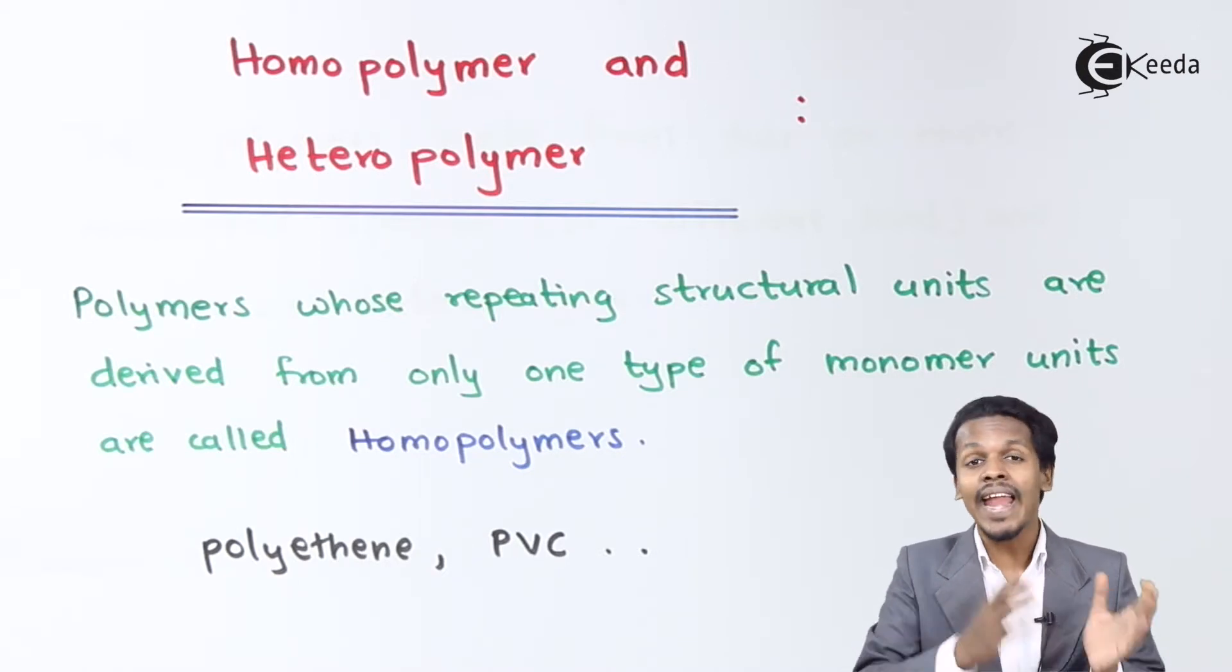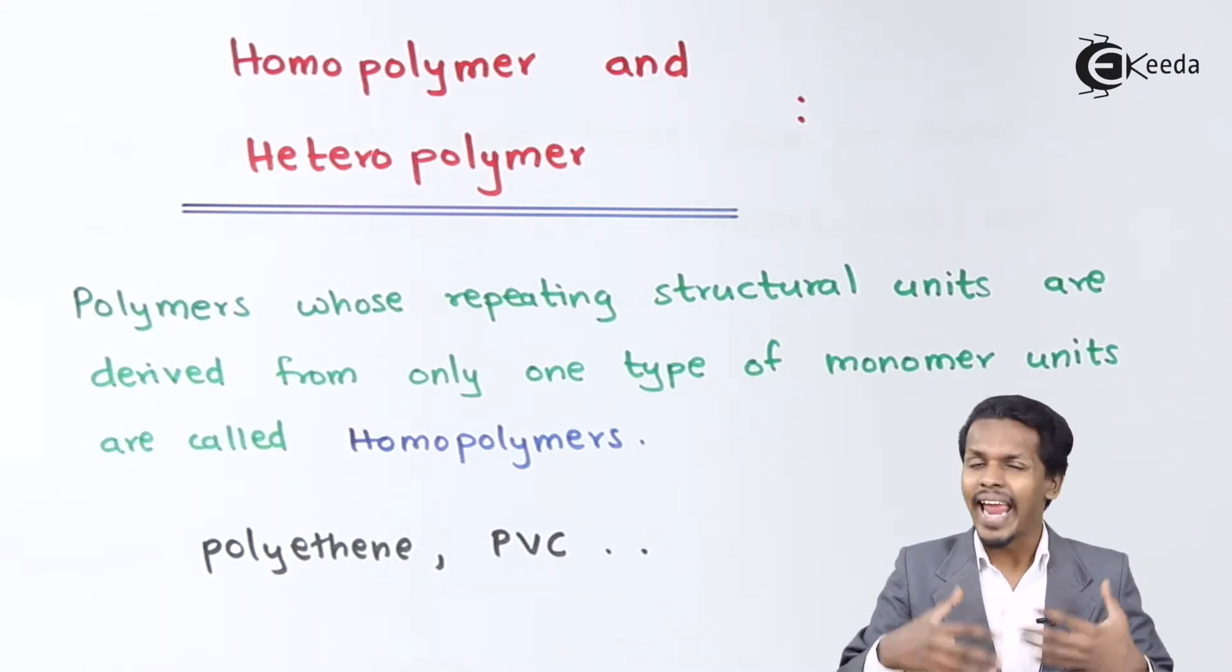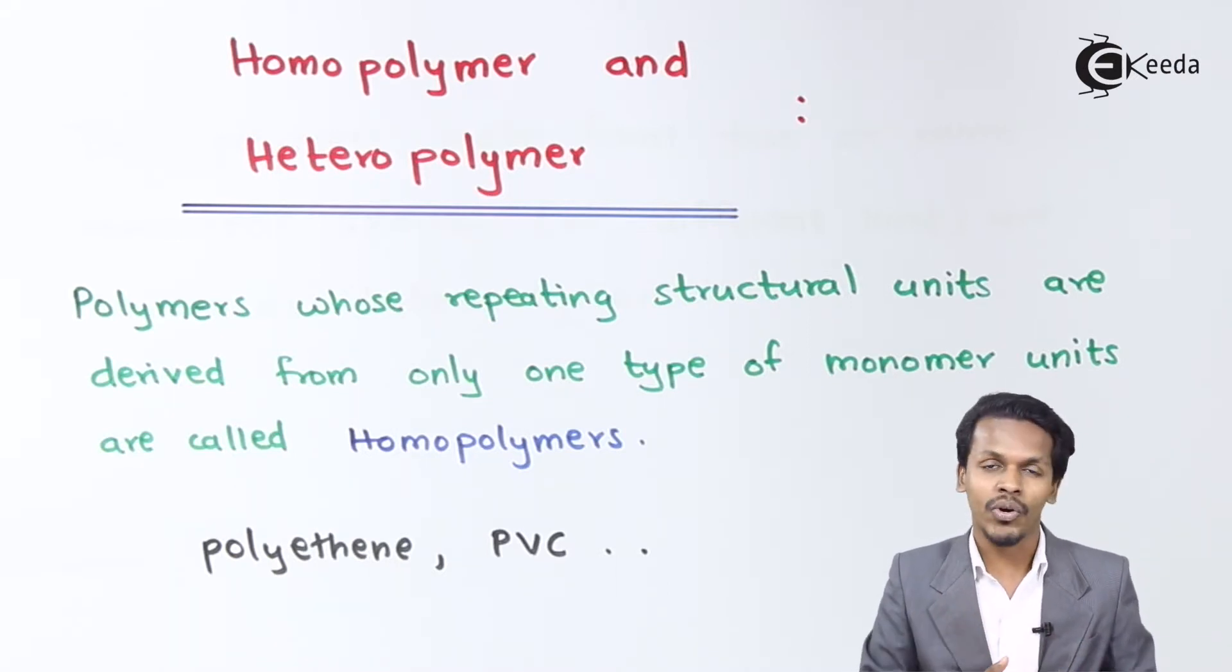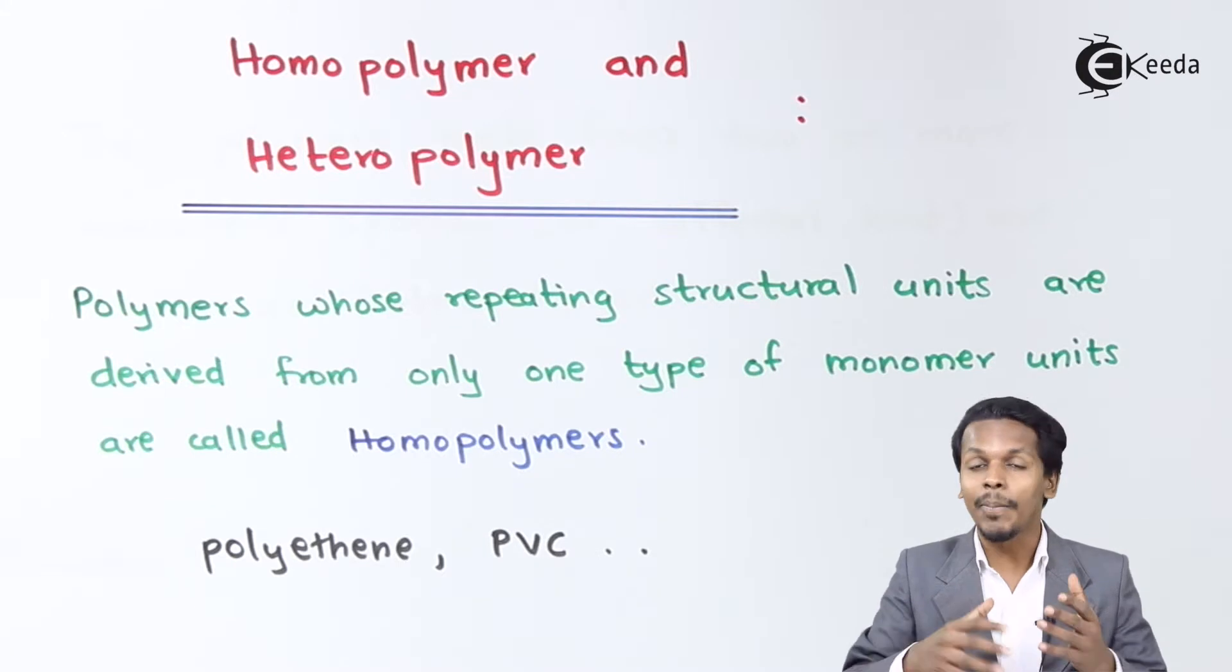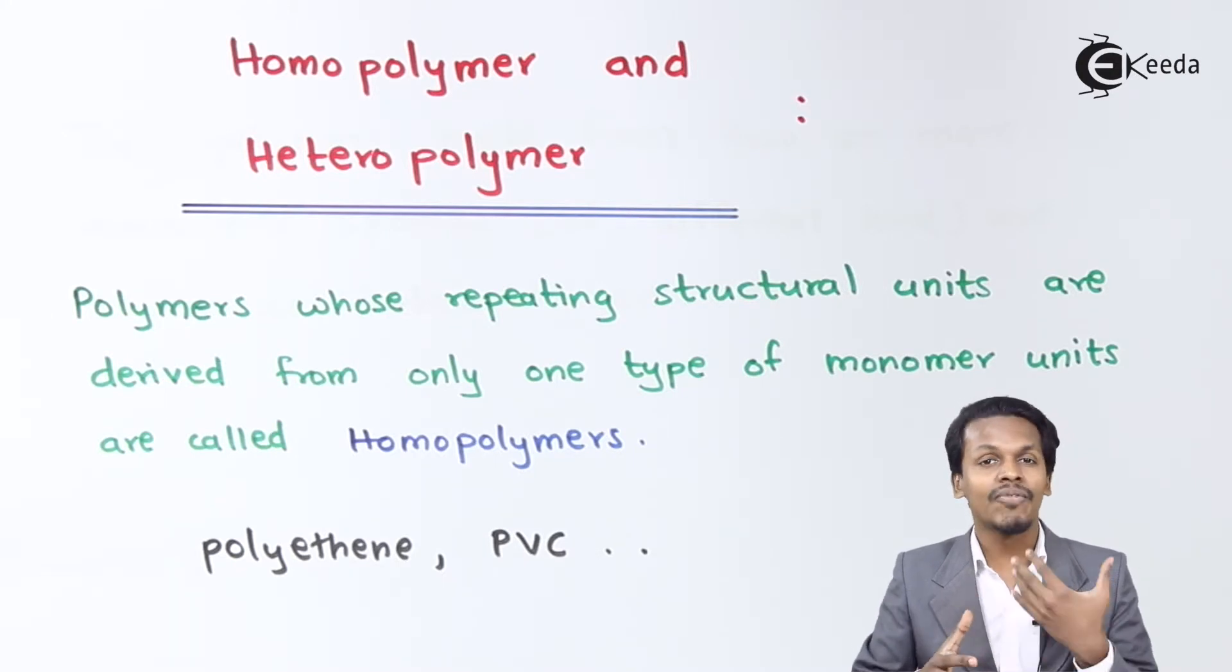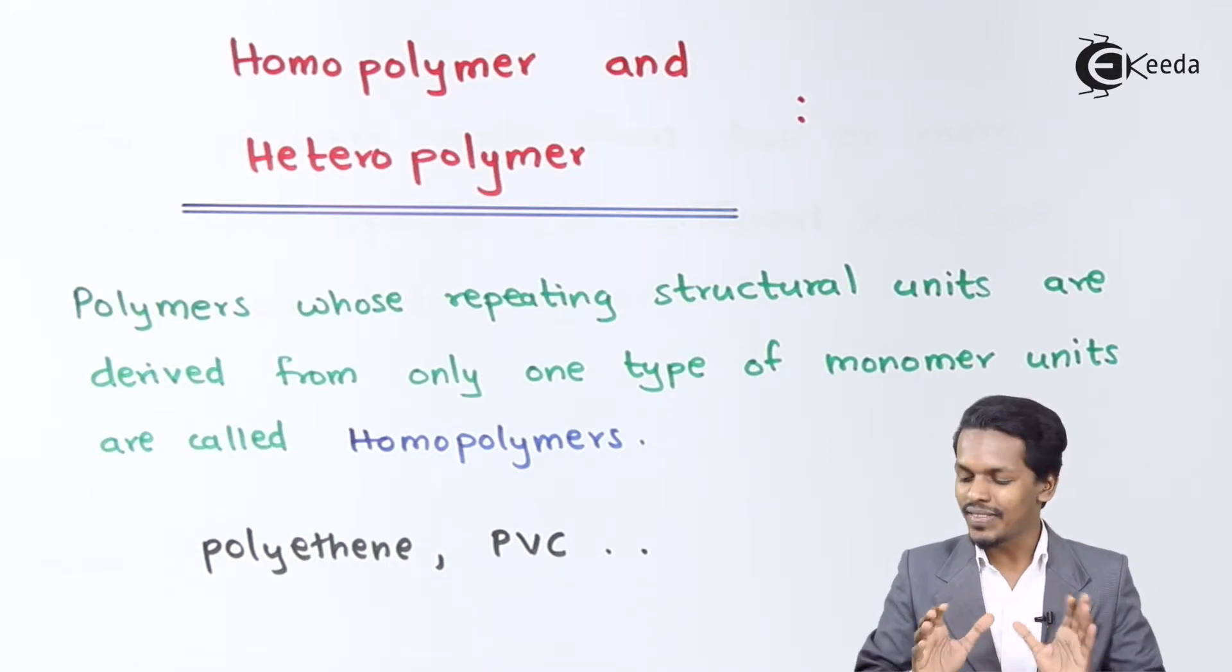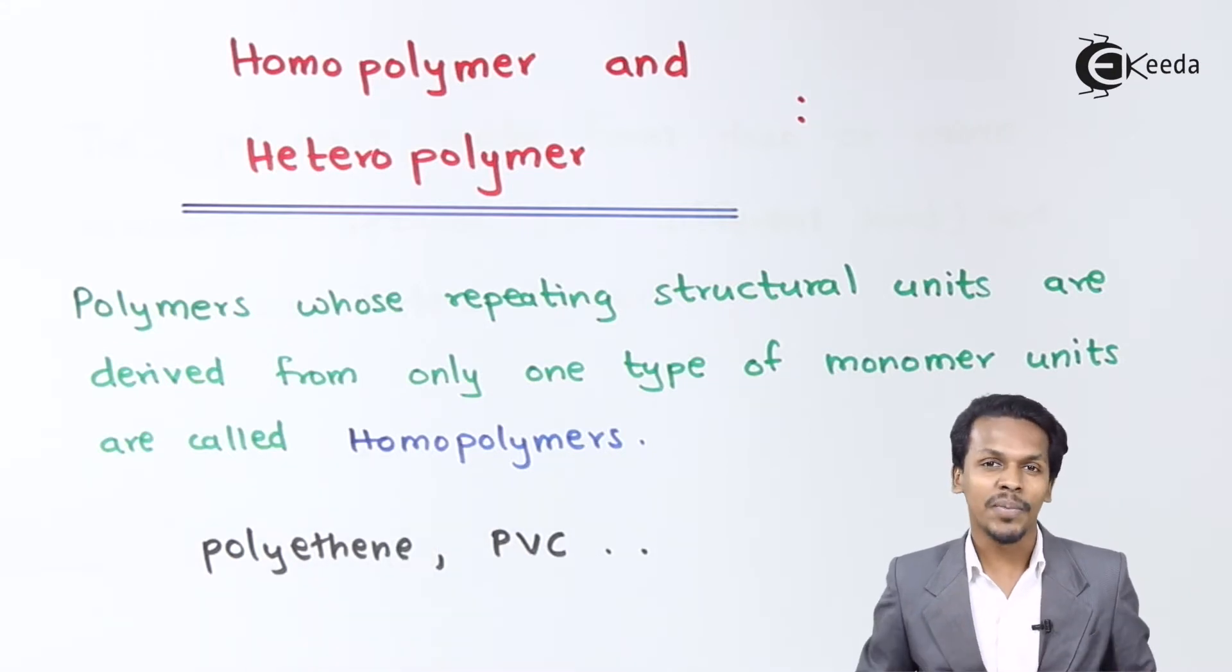If we consider n number of moles of vinyl chloride, because of the addition reaction the polymer that has been obtained is known as polyvinyl chloride. In that case, the repeating unit is vinyl chloride. There is only one type of repeating unit, and therefore these examples are homopolymers.